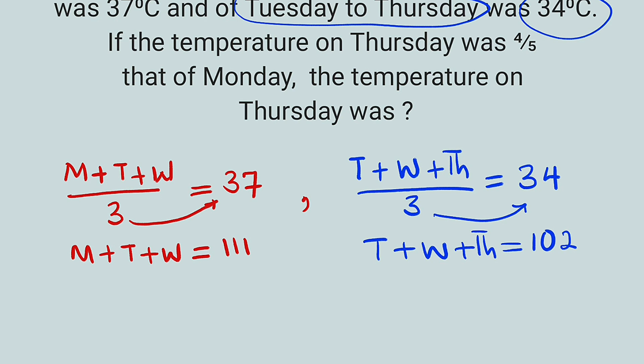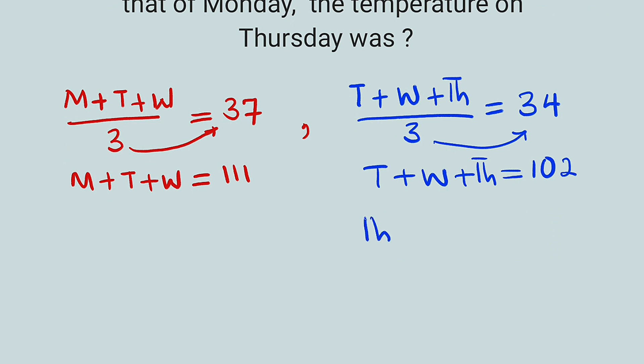Remember, we are looking for the temperature of Thursday. So we can make Thursday here the subject. From here, TH can be equal to 102 minus T plus W, if you take T plus W to the right-hand side. But T plus W can also be made the subject from the first equation right here. So we can see that T plus W is equal to 111 minus M if M crosses over.